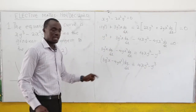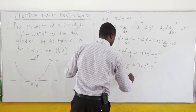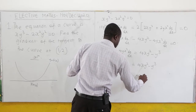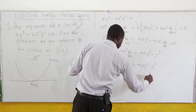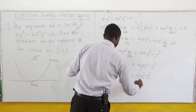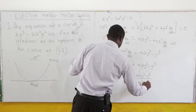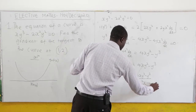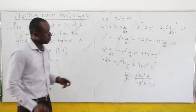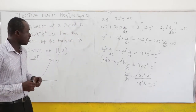Now we want to find dy/dx. We factorize dy/dx: so 3y square x minus 4y x square, times dy/dx equals 4xy square minus y cube. We divide both sides by what is multiplying dy/dx. So dy/dx equals 4xy square minus y cube, all over 3y square x minus 4y x square. This is the gradient.